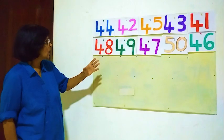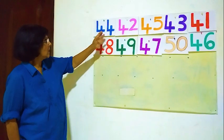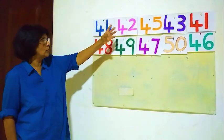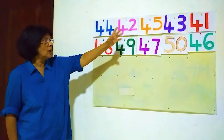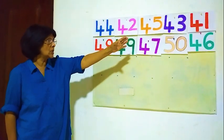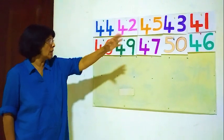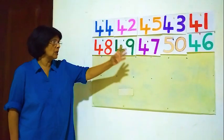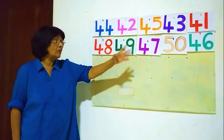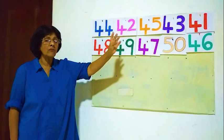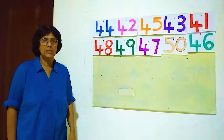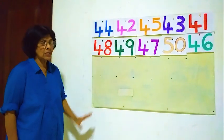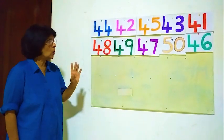In here, there are 44, 42, 45, 43, 41, 48, 49, 47, 50 and 46. There are 10 numbers here.